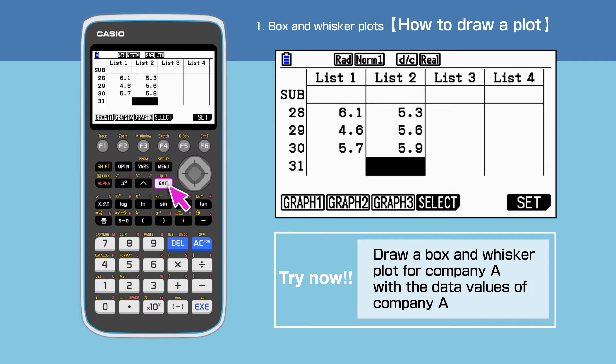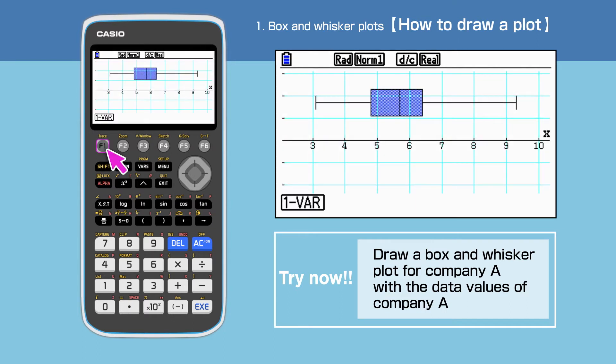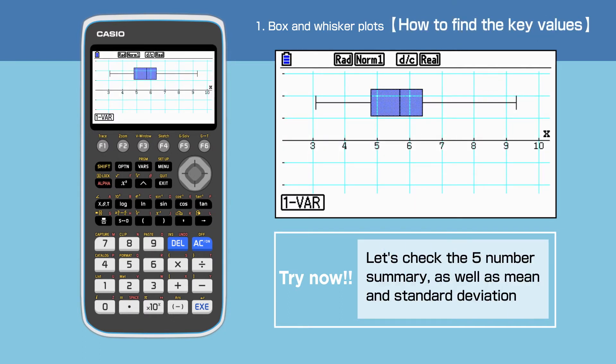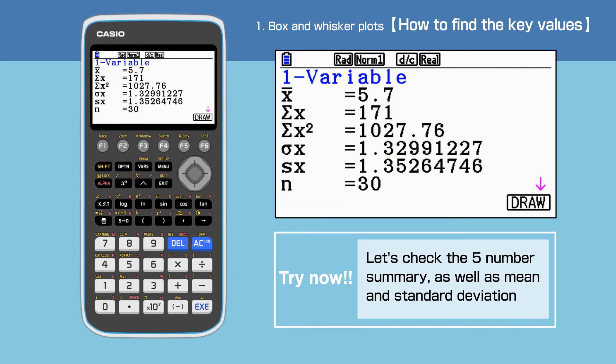Press exit to finish the setting and press F1 to draw a box and whisker plot. The 5 number summary as well as mean and standard deviation can be checked under F1 1 var. Here we can see that the mean is 5.7 and the standard deviation is 1.33.